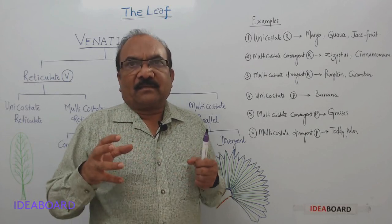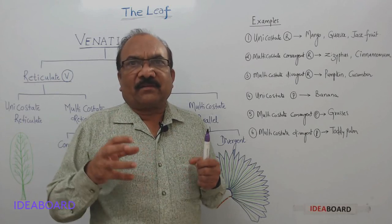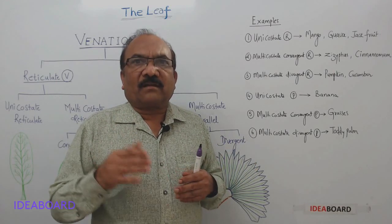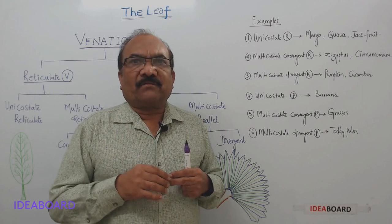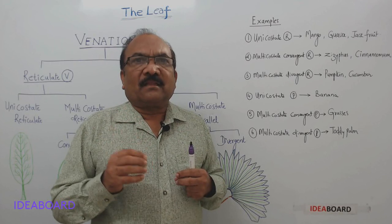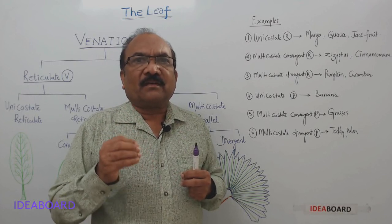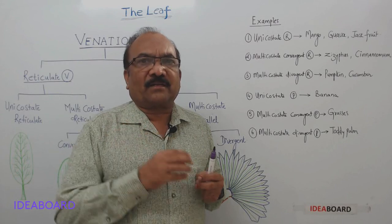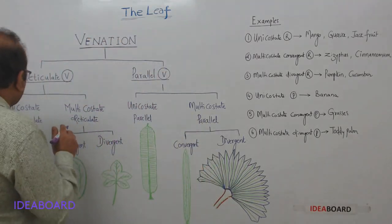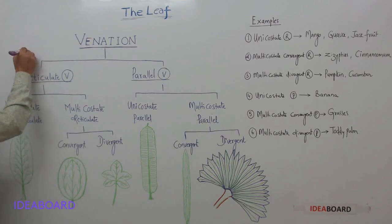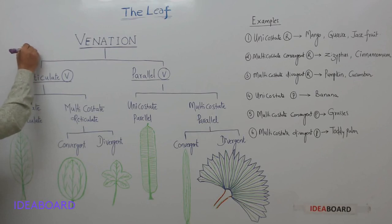That is why the venation is called reticulate venation — when the veins and veinlets form a net-like structure. This is the characteristic venation among dicots, or dicotyledonous plants.